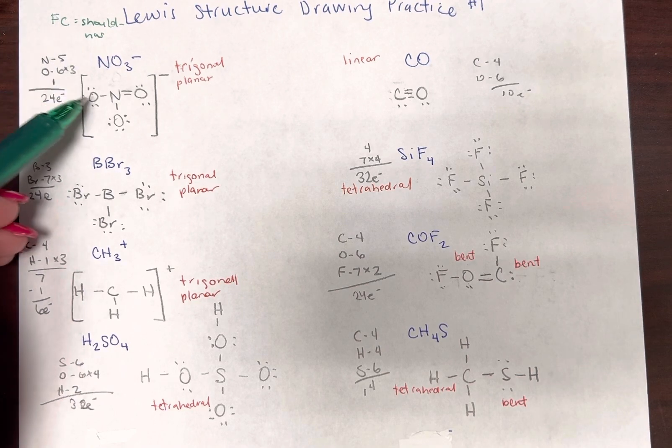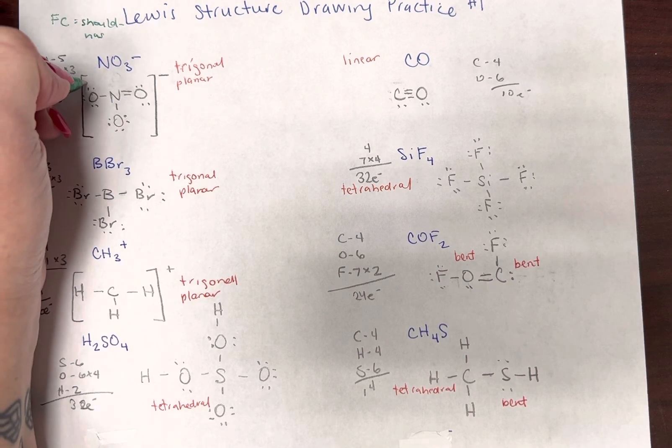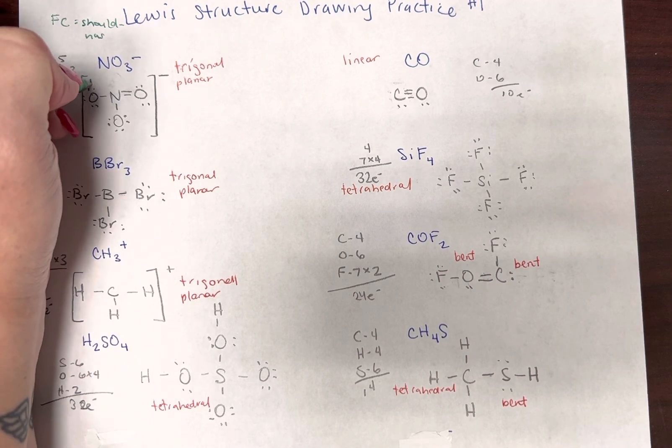Okay, oxygen brings in six. This oxygen has one, two, three, four, five, six, and that has seven, so that's a minus one.